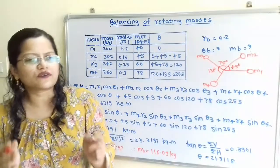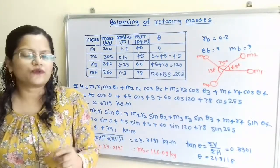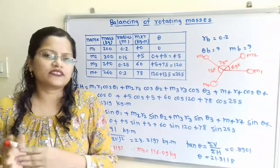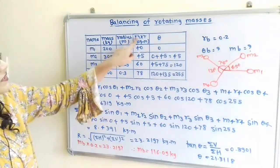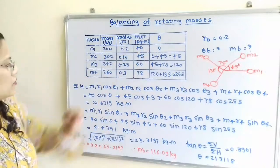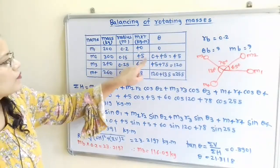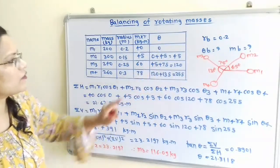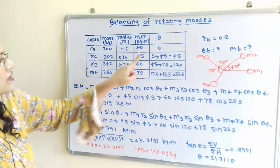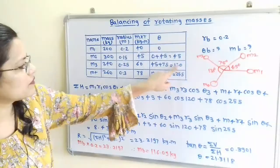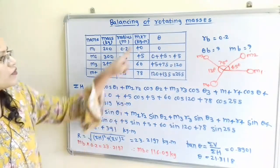We will now solve this question by the analytical method. First we find ΣH, the summation of all horizontal components: M1R1·cos θ1 + M2R2·cos θ2 + M3R3·cos θ3 + M4R4·cos θ4, which is 40·cos0° + 45·cos45° + 60·cos120° + 78·cos255°. Solving this gives ΣH = 21.6319 kg·m.